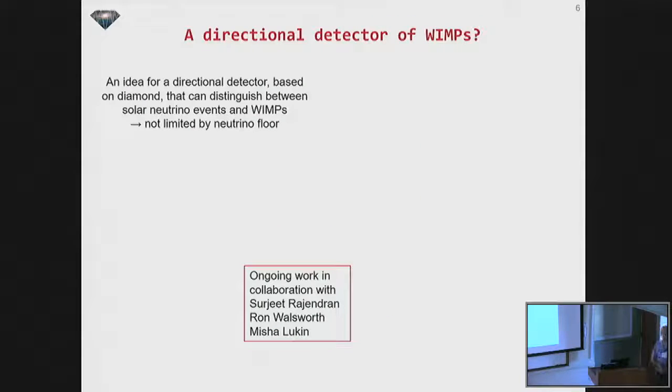So I'm going to give a quick plug for some work that we're doing in collaboration with Sujit Rajendran, Ron and Misha. And that's an idea for a directional detector, which is trying to get around this problem of the neutrino floor. So the idea is that if you have a detector that can tell which way the WIMP or this incoming particle came from, then you can just say, well, I'm not going to look at the sun. I'm going to just forget about all of those events, and I'm going to look at everything else. Or maybe as Andrei talked about, maybe I'm going to try and figure out how our motion through the galaxy kind of affects the event rate and have basically sensitivity to the directionality.